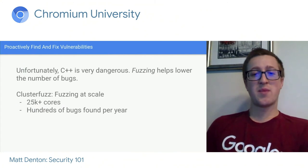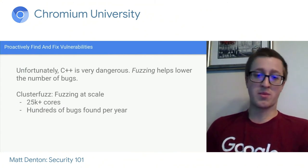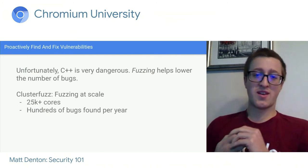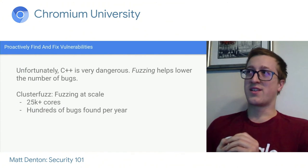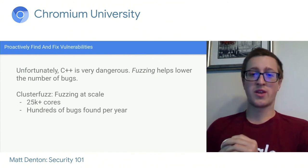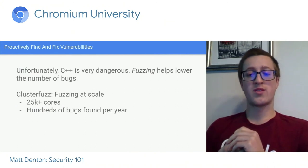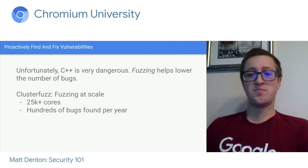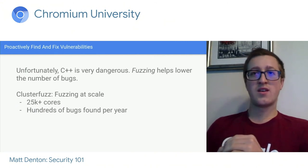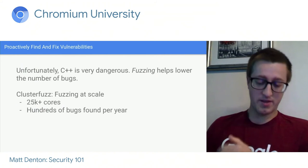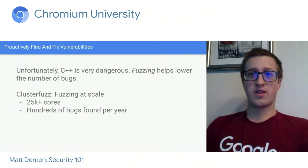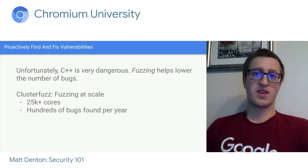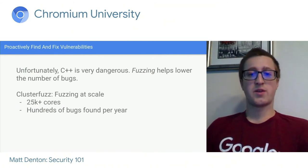C++ is a memory unsafe language, which means it's really easy to write memory corruption bugs. When Chromium started, C++ was probably the only viable language to write a web browser in, and that's probably not true anymore, but we have so much C++ we can't easily get away from it. We try to proactively find and fix bugs. One of the most efficient methods is fuzzing — throwing randomly generated test cases at Chromium and looking for crashes, memory corruption, and failed assertions. That's actually the topic of the next talk, Fuzzing 101.